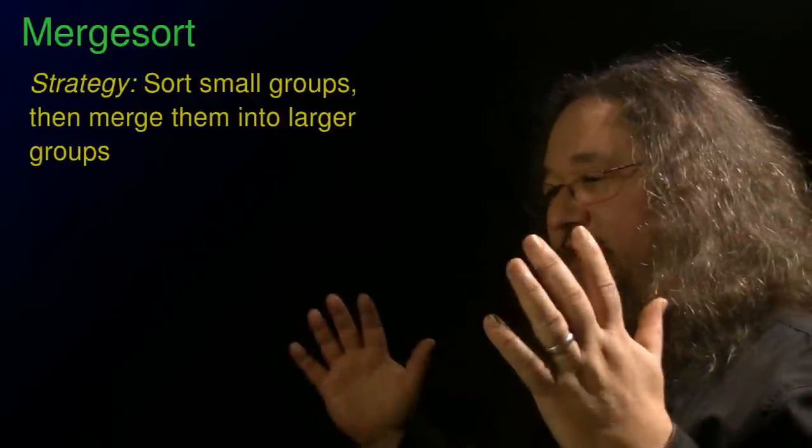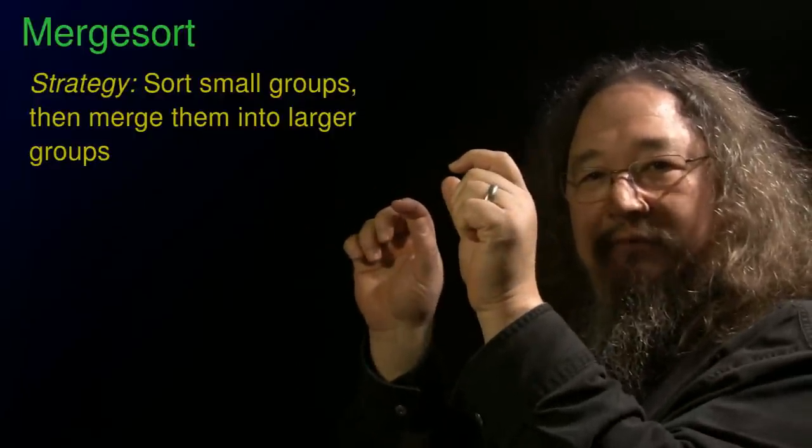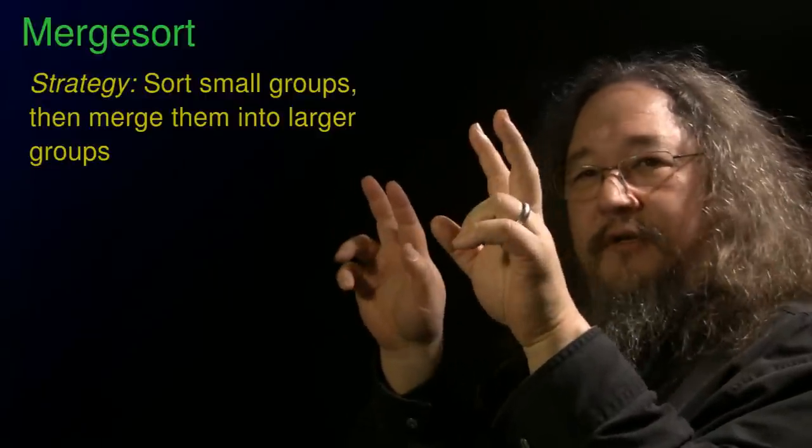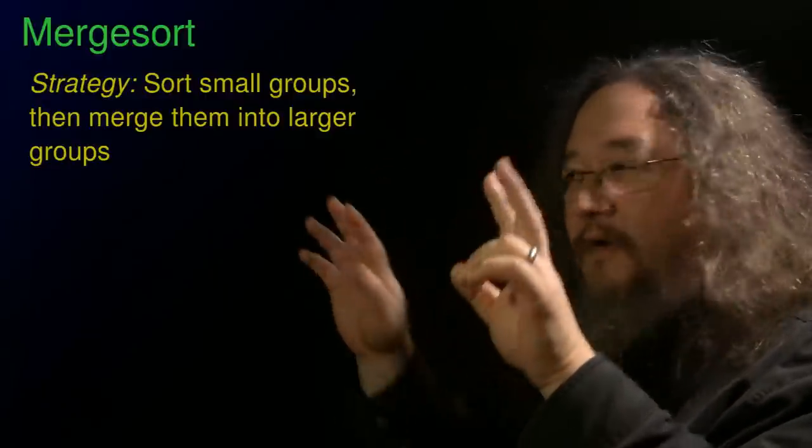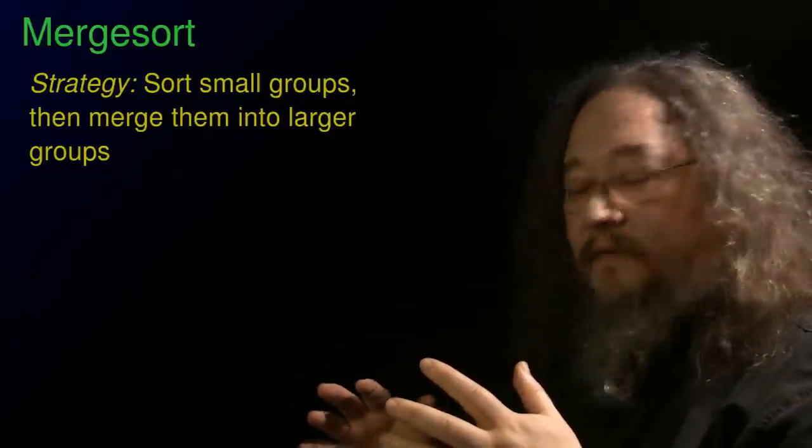And the idea is you take whatever it is to sort and you break them into two groups, and you break those into two groups, until you get down to tiny groups of two. You sort those, just sorting them by swapping if need be. And then you start merging the little groups of two into groups of four, and then groups of four into groups of eight, and so on, until you get all the way to the end.